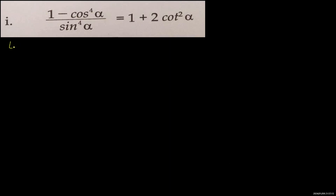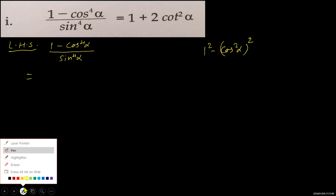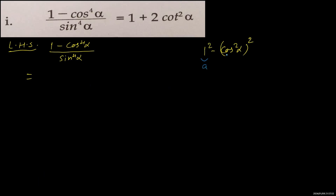Let's see the next question, question I. There is 1 minus cos square alpha upon sin square alpha on the left hand side, and 1 plus 2 cot square alpha on the right hand side. We have to prove this identity. For this, we will take the left hand side first. The left hand side is 1 minus cos square alpha upon sin to the power 4 alpha. And here also, 1 minus cos square alpha can be written as 1 square minus cos square alpha, whole square.